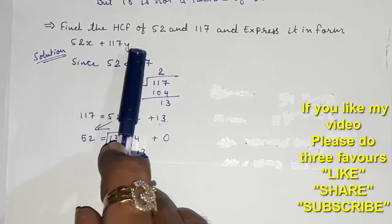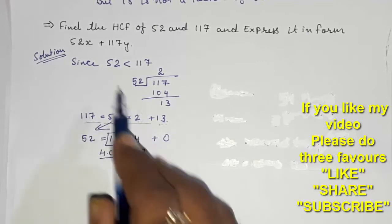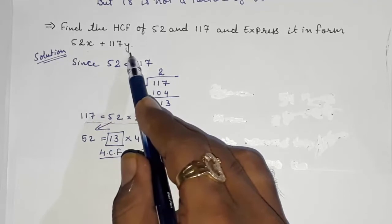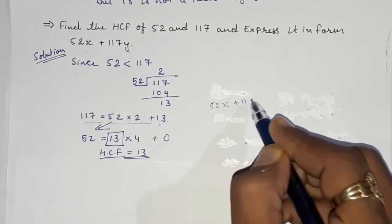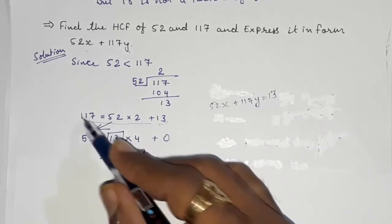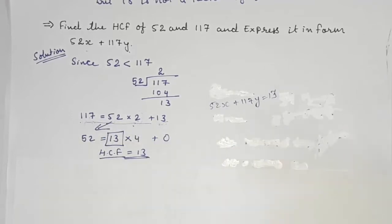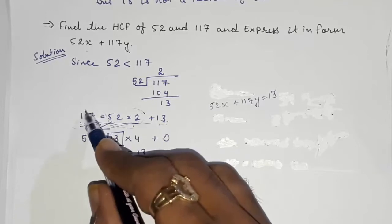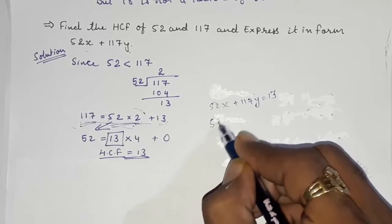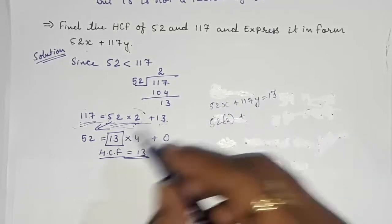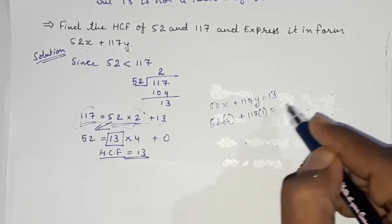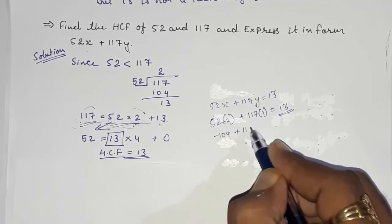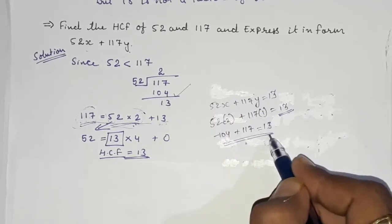Now we have to express the HCF in the form 52x + 117y = 13. Looking at the steps, we need to combine the two terms. One number should be negative and the other positive. If we take 52 × (−2) + 117 × 1, that gives −104 + 117 = 13. So that works.